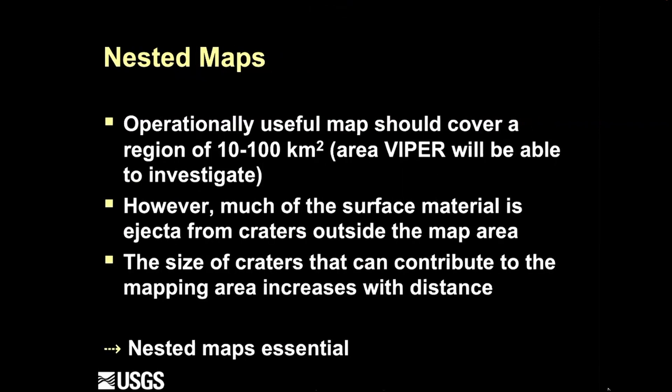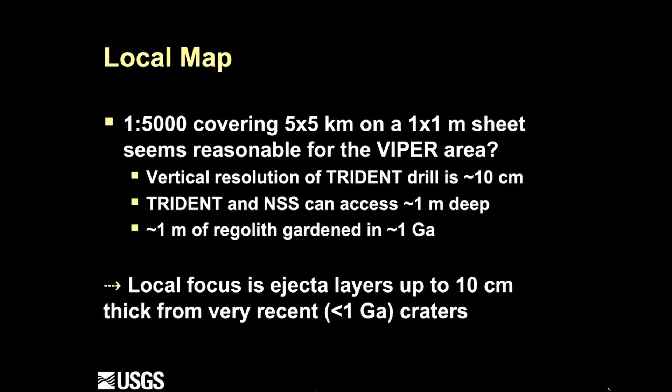We have concluded that we really need nested maps. The area we're going to operate in — a few kilometers by a few kilometers — is where we want detailed information. However, material from outside the mapping area has been thrown in, so we need to worry about things outside that postage stamp of a map. The size of the craters that can dump significant amounts of ejecta into the mapping area gets larger the farther away you go, so you can ignore smaller and smaller craters as you go out. Nesting the maps seems essential.